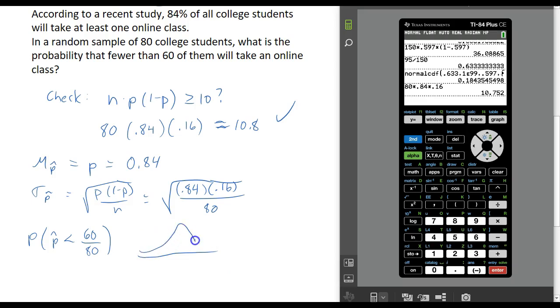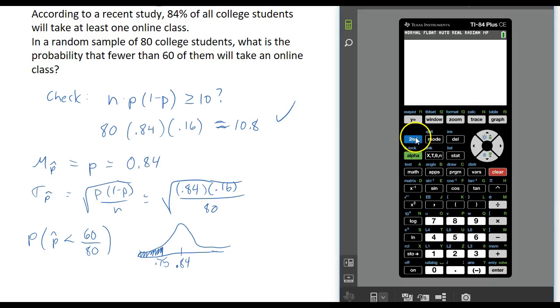On my picture, the mean is 84%, that's going to be in the middle. 60 out of 80 is 75%, which is over here, and we want to find the probability that it's less than that. I'm going to go into my distributions menu again, choose normal CDF. My lower bound here is going to be negative infinity, so I'll do negative 1E99. My upper bound is going to be 0.75.